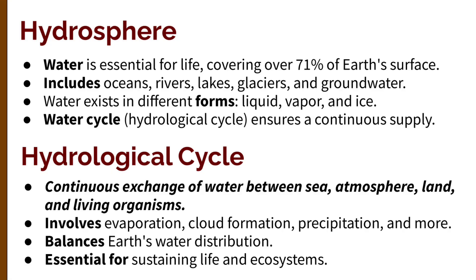The water cycle, also called the hydrological cycle, ensures a continuous supply of water. It involves a continuous exchange of water between the sea, atmosphere, land, and living organisms.